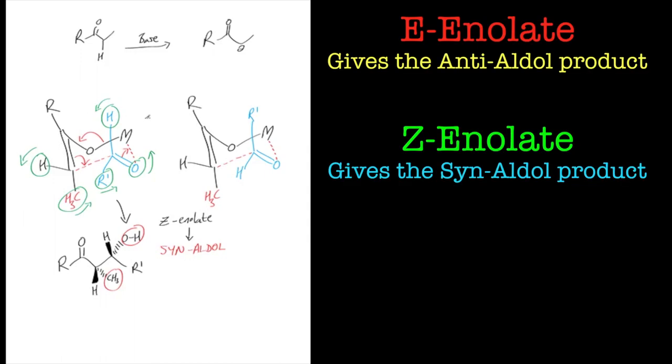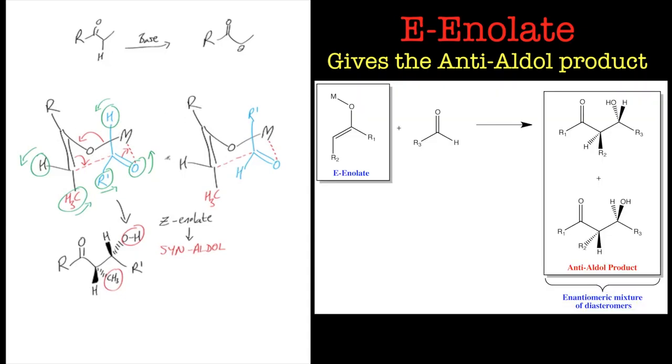Now the hardest part of the whole of this reaction mechanism is trying to predict the product, and that's probably why you're here watching this tutorial. So my recommendation is to always draw the product from that six-membered ring and you should end up with the right stereochemistry at the end.